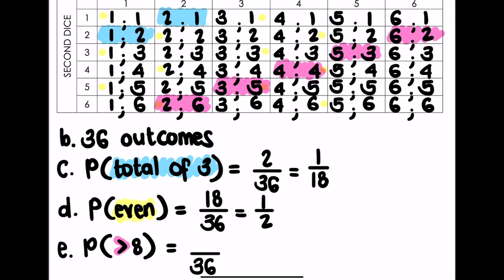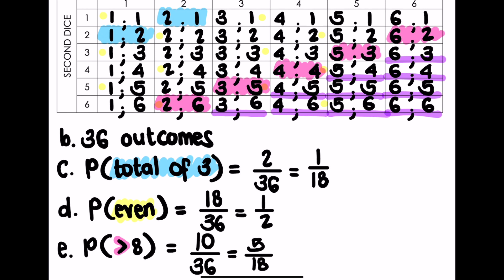Counting the values underneath the pink, I have 10 values that are greater than eight. Ten out of 36 simplified becomes five out of 18 — so a five out of 18 probability of picking a number greater than eight.